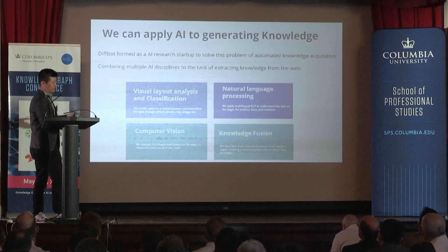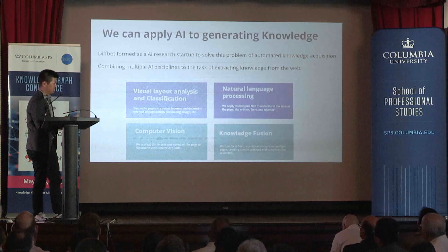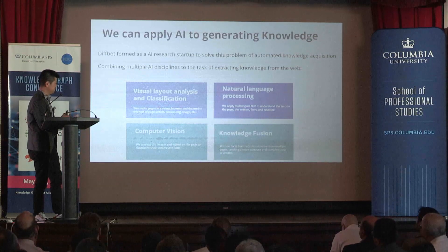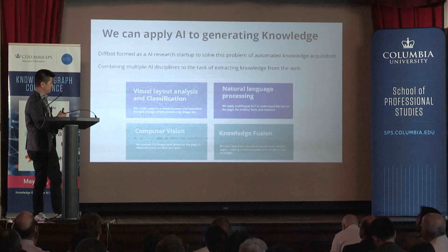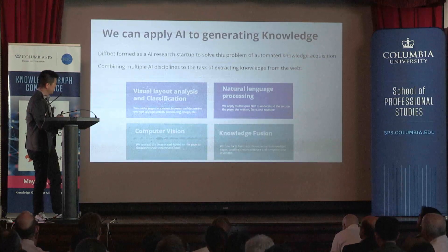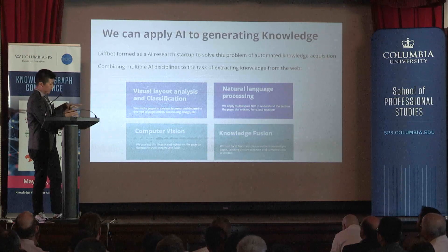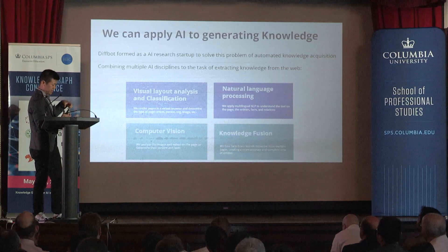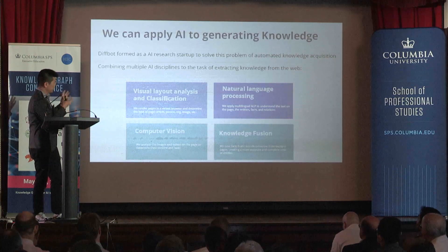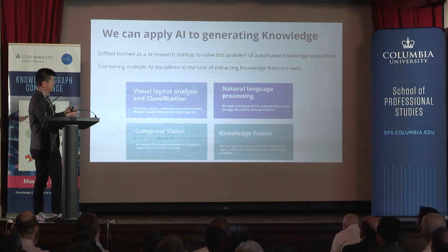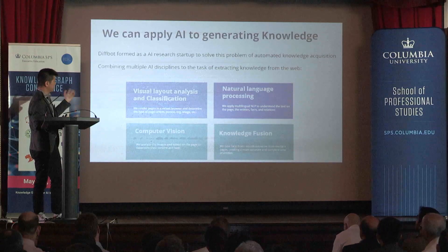We stripped away a whole bunch of stuff to make it render about 100 times faster than Chrome, at billions of pages per month in our data center. Then we dump out all of these deep, low-level features that we use in our machine learning pipeline.